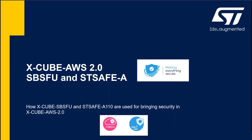Hello everyone, and welcome to this presentation about Xcube AWS 2.0. The Xcube AWS 2.0 package is the first Xcube package with Amazon FreeRTOS. The Xcube AWS 1.x packages are still based on the CSDK only — that's the difference between branch 1.x and branch 2.x. In this presentation, we will focus on how security has been brought into this AWS 2.0 package with the use of SBSFU and STSAFE-A.